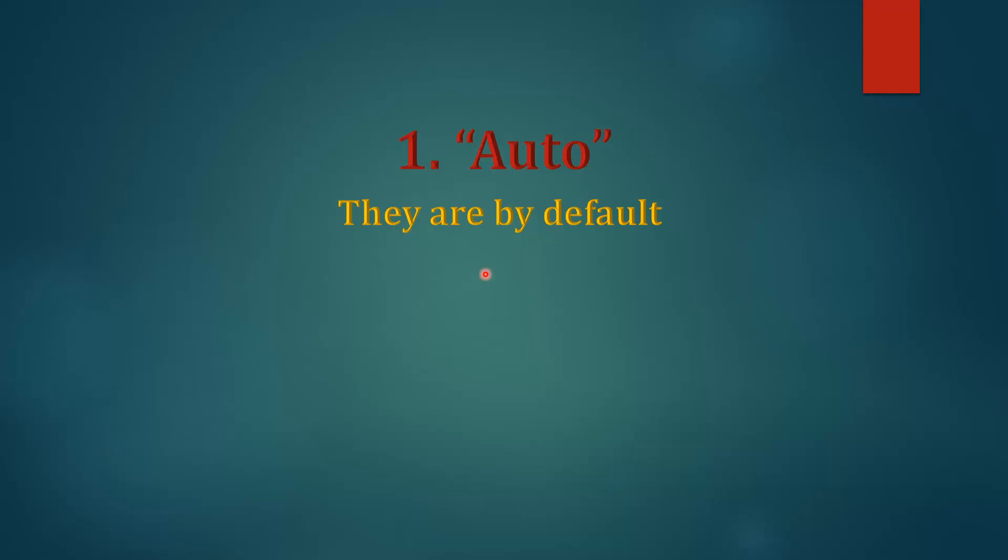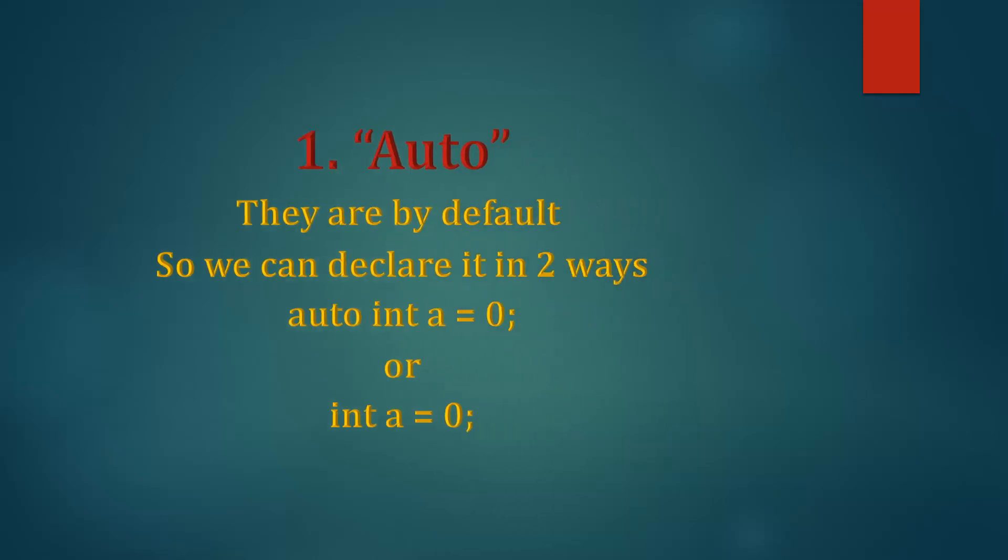I'll provide you an example. We can declare auto storage class in two ways. First, auto int a equal to zero, and the storage class is basically appended here as a keyword. And since they are by default, so even if we skip this auto, then also it will be considered an auto type. The second method will be like this: we skip this auto keyword, but still it will be an auto type.